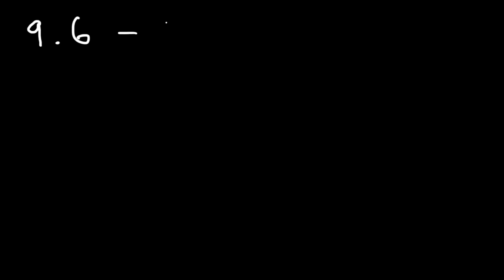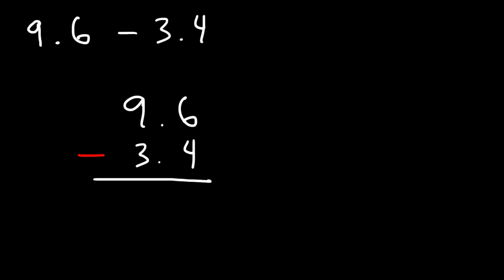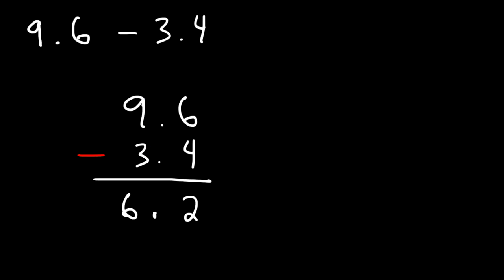In this video we're going to talk about how to subtract decimal numbers. Let's start with a simple example: what is 9.6 minus 3.4? We need to line up the two numbers, making sure that the decimal points are lined up, and then just subtract column by column starting from the right. 6 minus 4 is 2, and then in the second column we have 9 minus 3 which is 6, so the answer is 6.2.